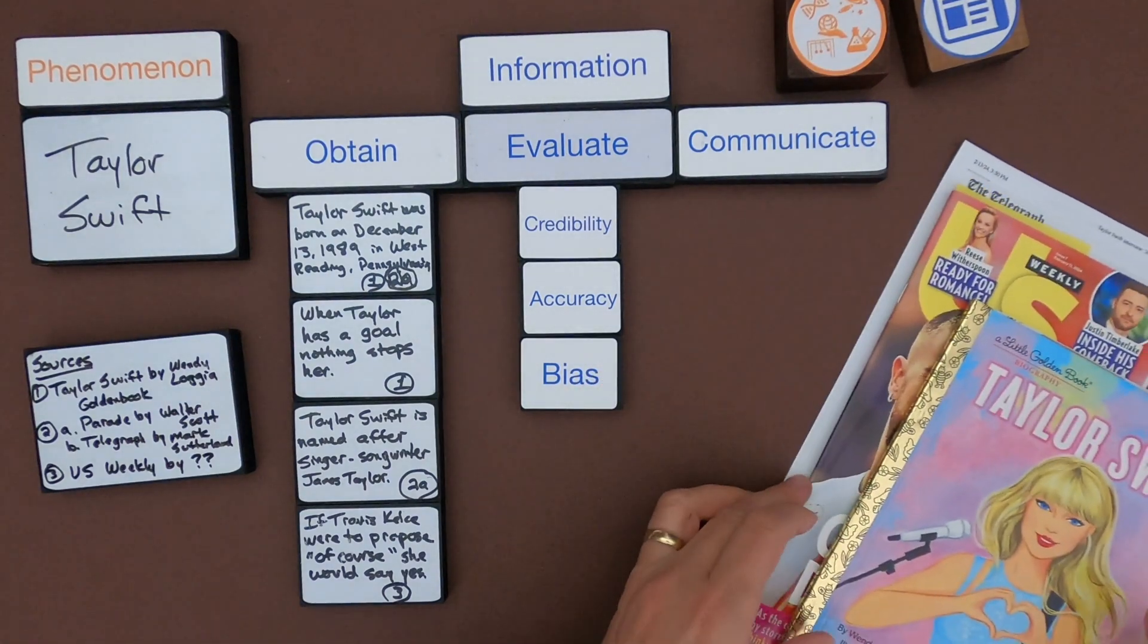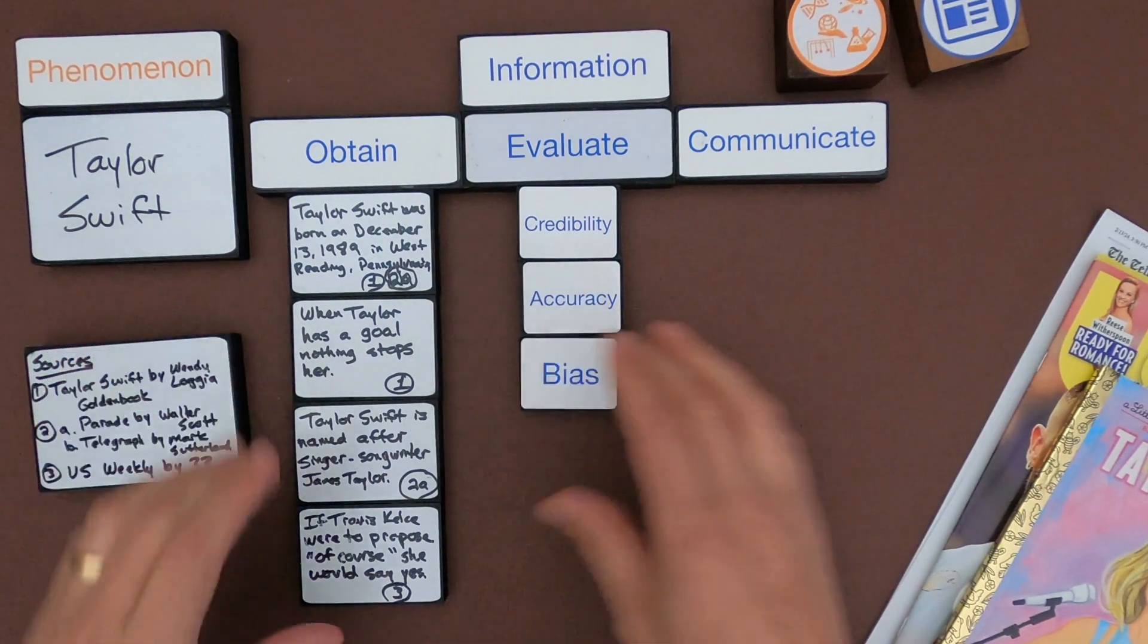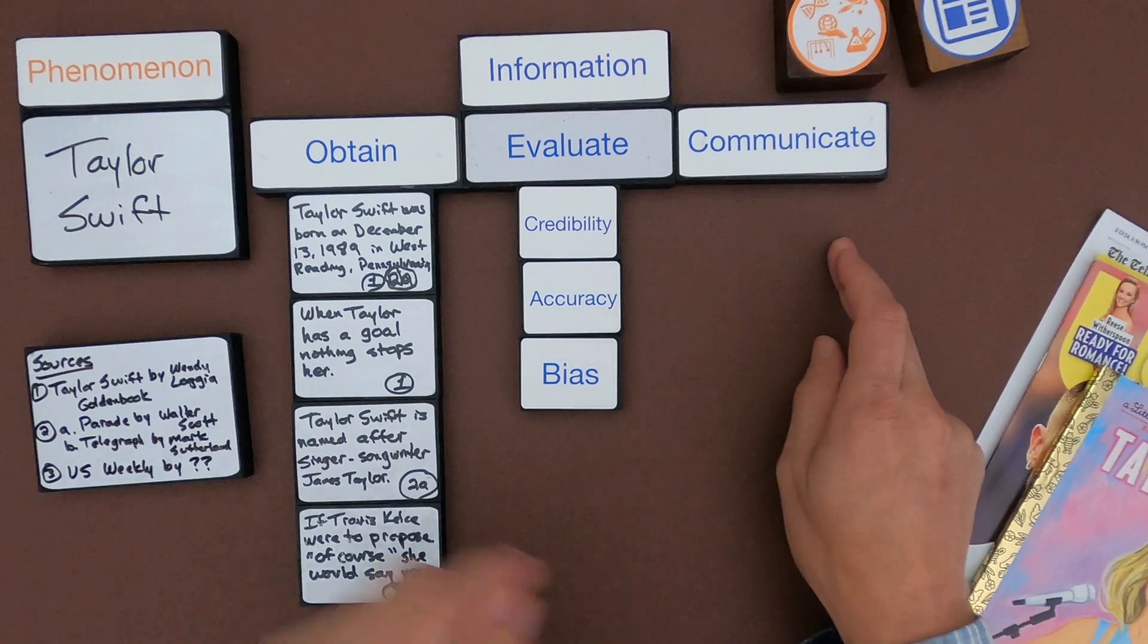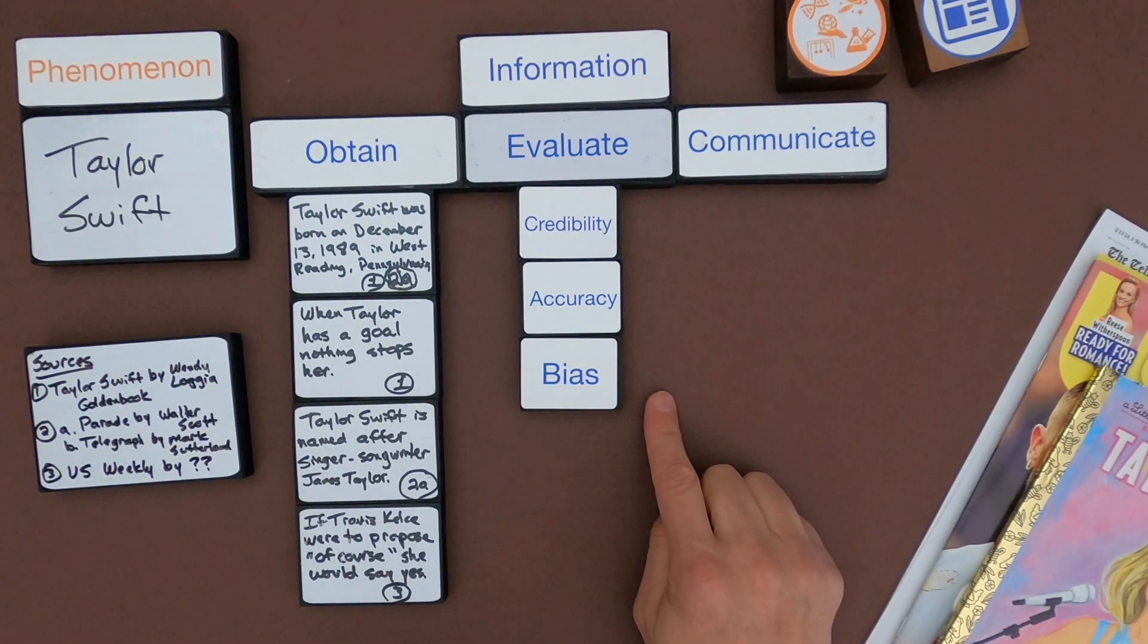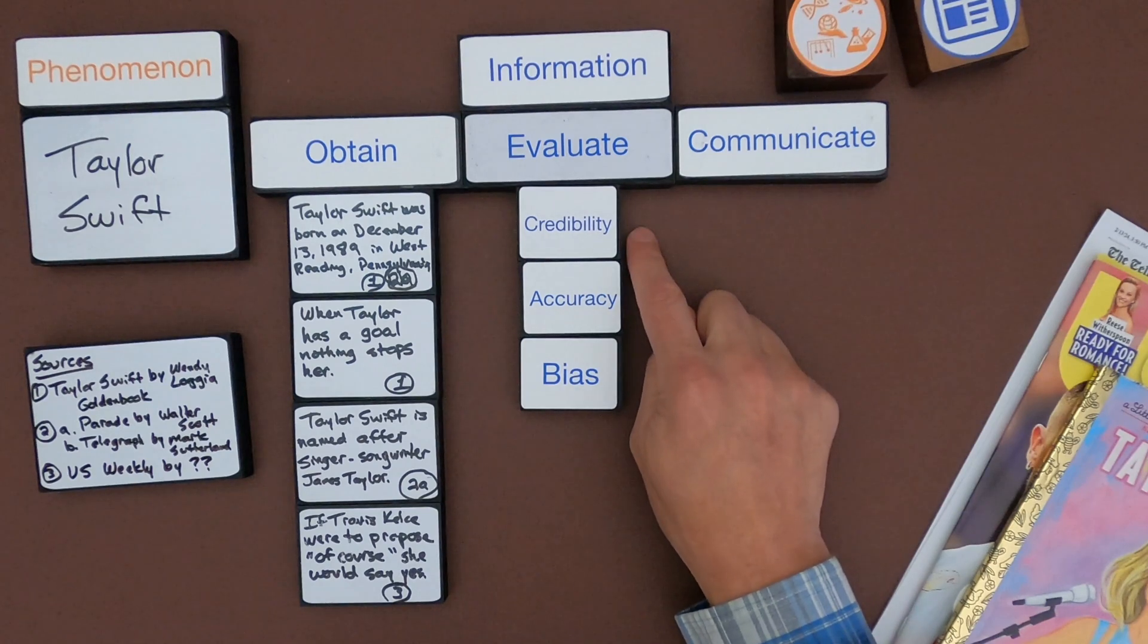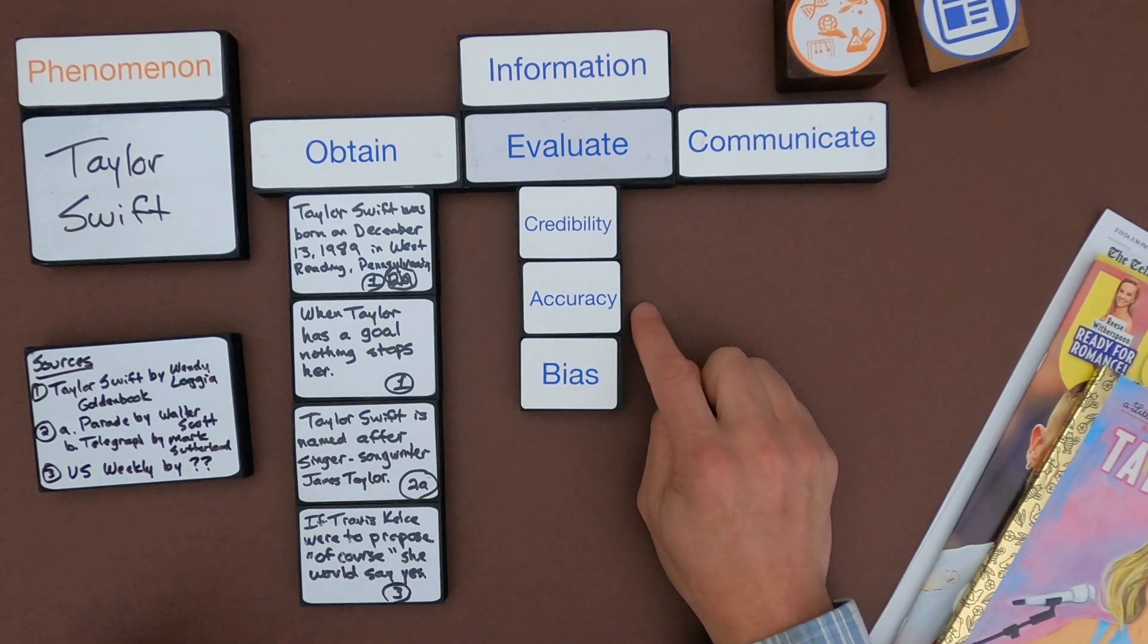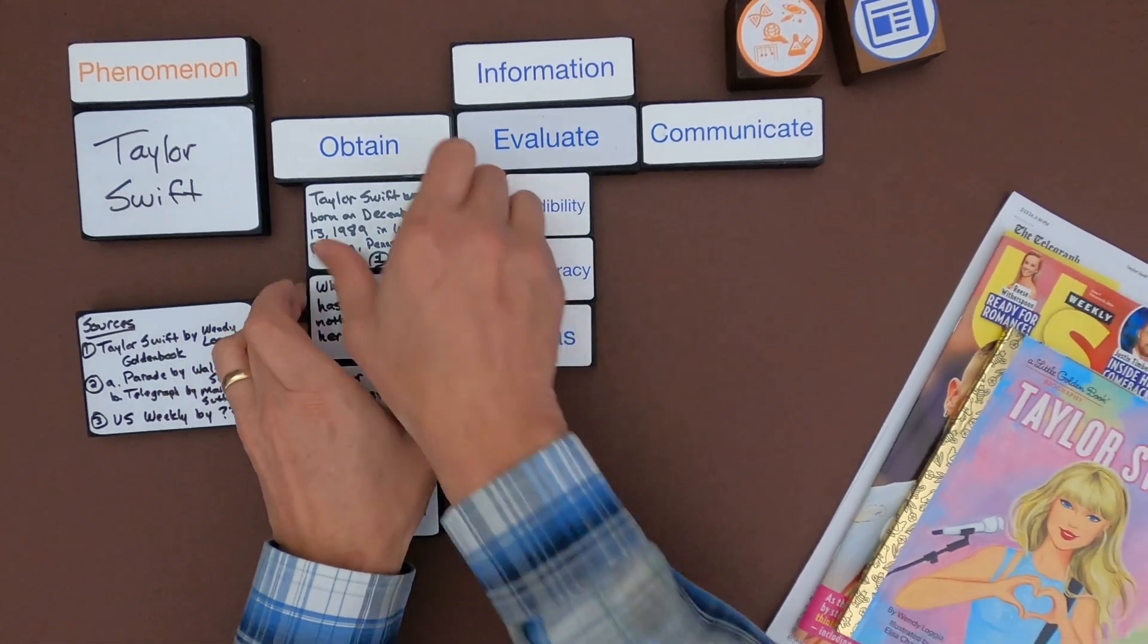And so now the next thing I want to do is I want to integrate that information. So I'm going to move information that I would be comfortable communicating to other people from here to here. But to make it over to the communication side, I really have to go through this checklist. I have to think about the source. Is it credible? In other words, is it reliable or trustworthy? Is it accurate? Is it correct as far as information goes? And then I want to eliminate bias. I want the viewpoint to be objective, so not slanted or prejudiced in any way.